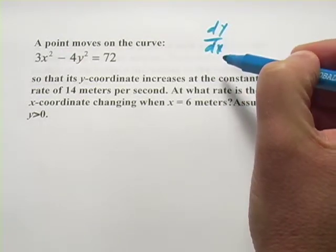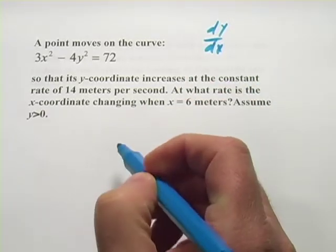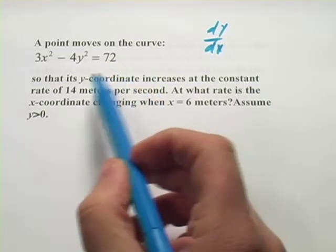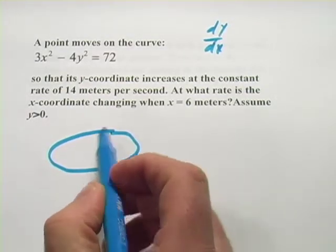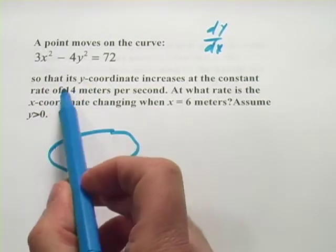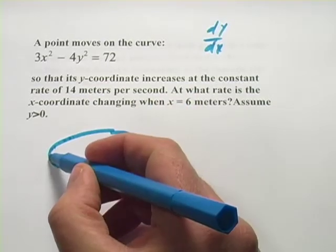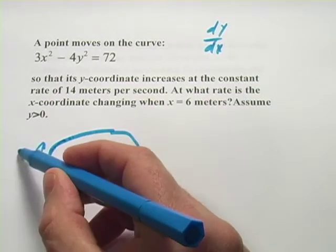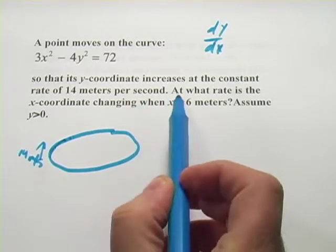Because the derivative represents the rate of change of a function, we can use it to solve all kinds of great problems. For example, we have this one. A point moves on the curve, and we have this curve, so that's some kind of an ellipse. I'll just draw an ellipse here. So a point is cruising along on this curve, and it says it moves on the curve so that the y-coordinate increases at the constant rate of 14 meters per second. So maybe it's coming up this slope here, and the rate at which it's rising is a constant 14 meters per second.